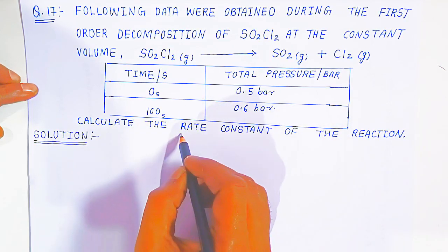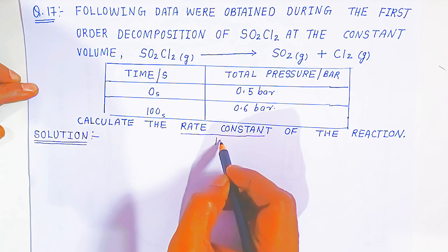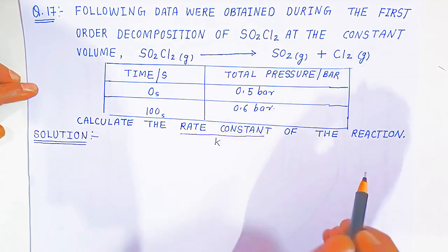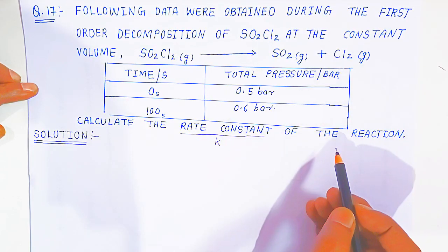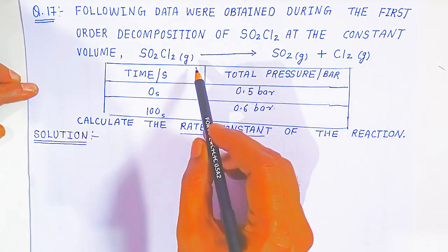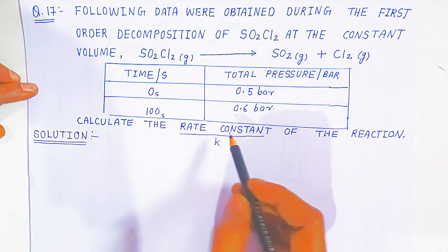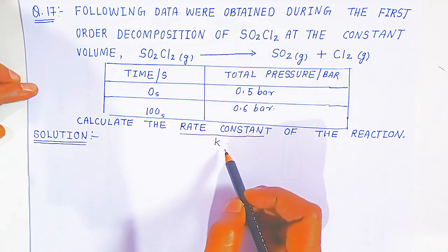What will be the rate constant? We are going to calculate k of the reaction. Everything needed is given, and with the help of the given data we are going to find the rate constant.